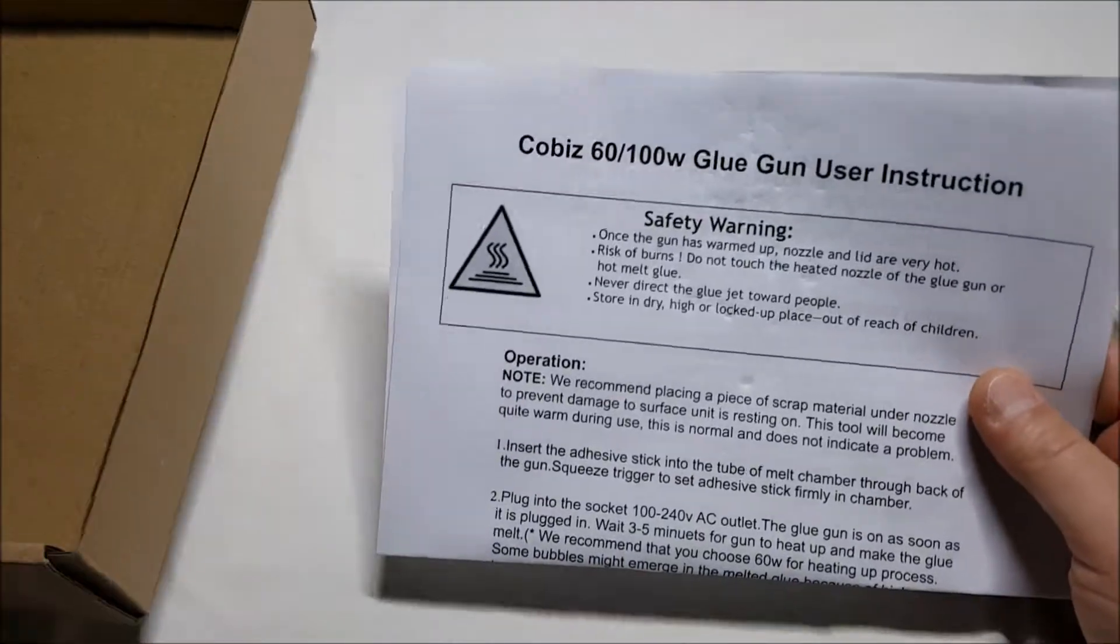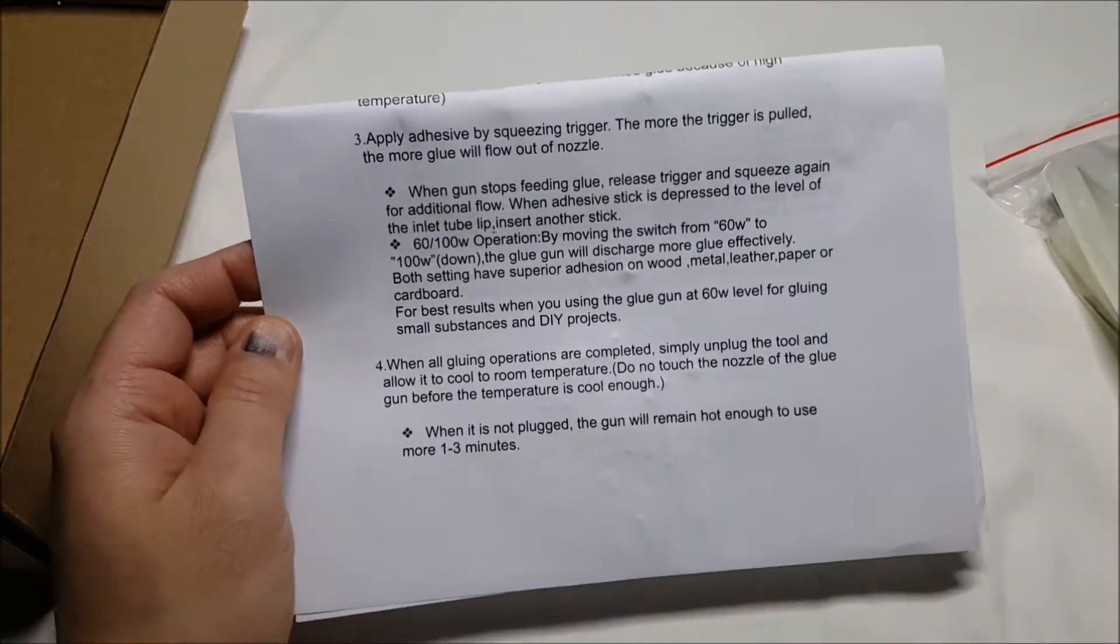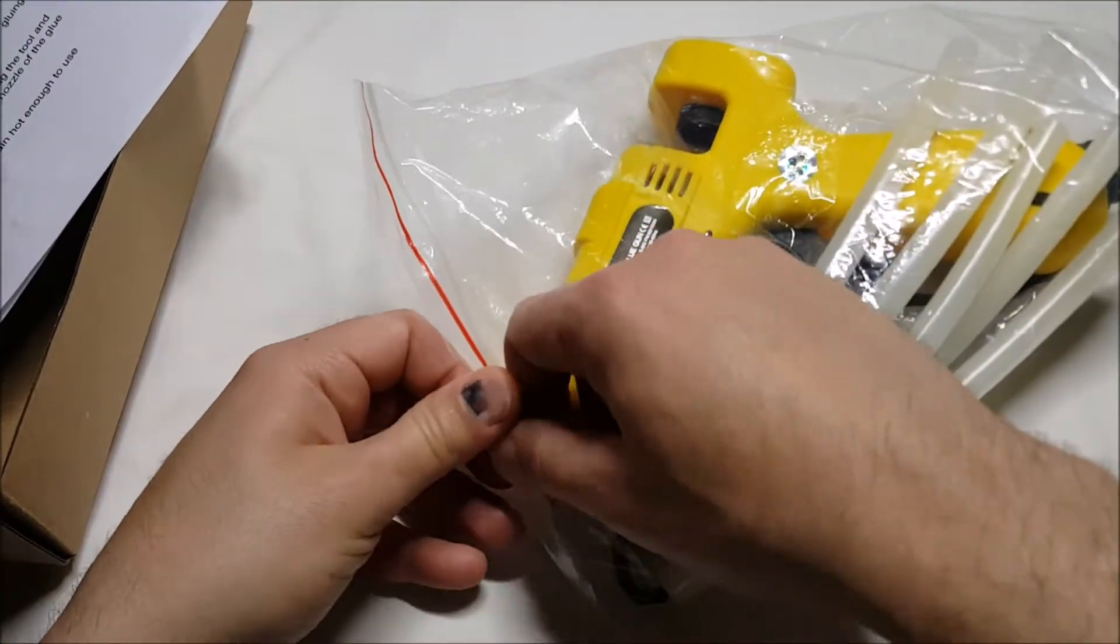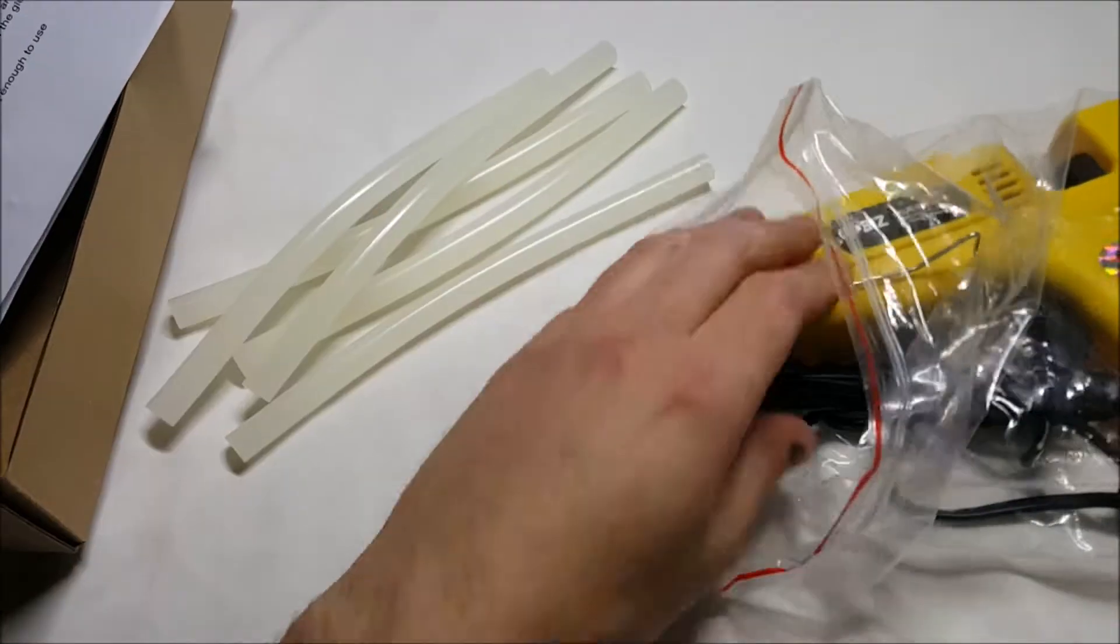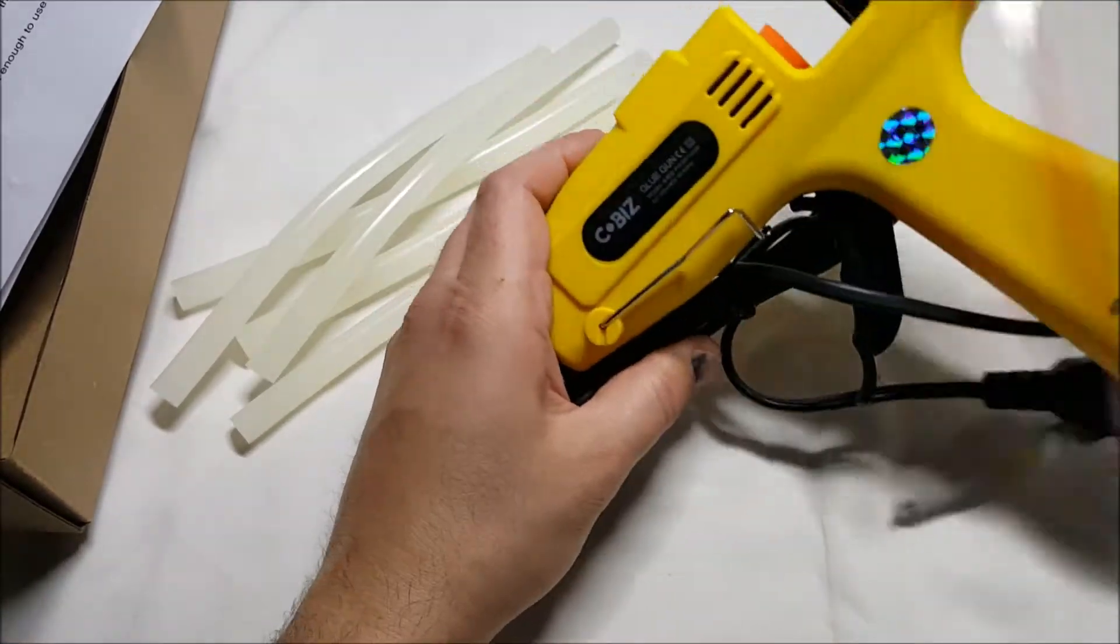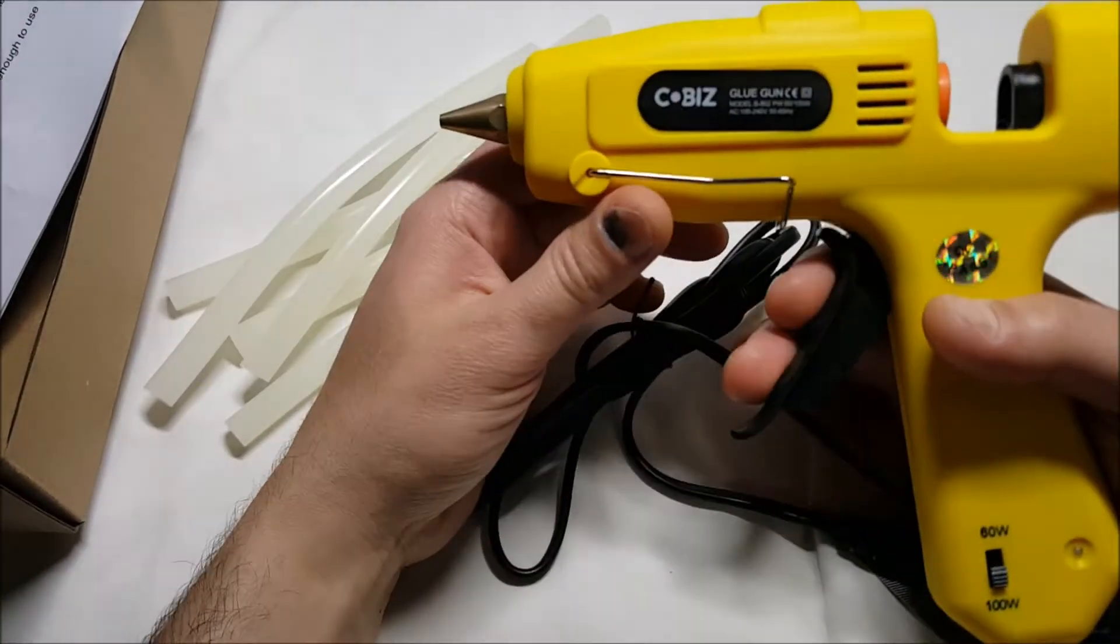It does come with just basic user instructions here. I mean for the most part, if you use one glue gun you use them all. Again, this uses the big sticks, they both have their place. I have both sizes of glue guns myself, small and large.